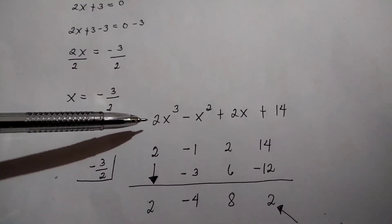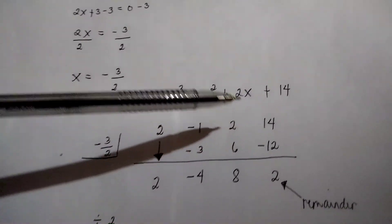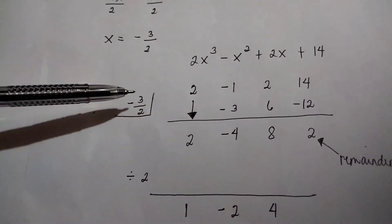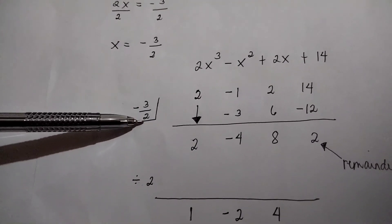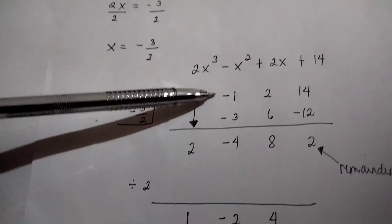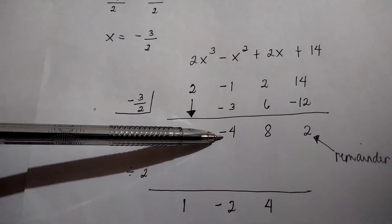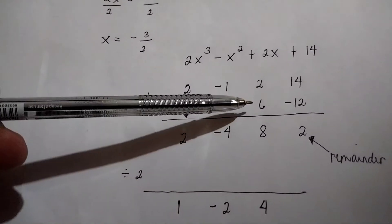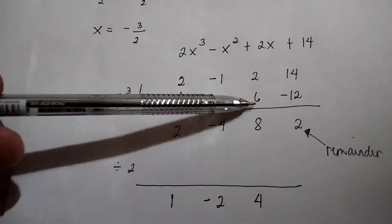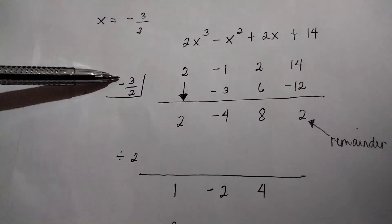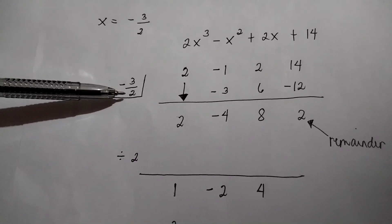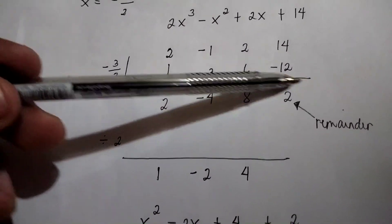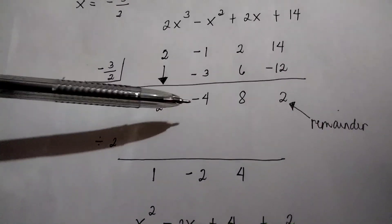Take all the coefficients of the dividend: 2, negative 1, 2, and 14. Bring down 2. Then 2 times negative 3 is negative 6, divide by 2 is negative 3, write it here. Negative 1 plus negative 3 is negative 4. Then negative 4 times negative 3 is positive 12, divide by 2 is 6, write it here. Then 2 plus 6 is 8. Then 8 times negative 3 is negative 24, divide by 2 is negative 12, write it here. Then 14 plus negative 12 is 2, so the remainder is 2. The coefficients are 2, negative 4, 8, and 2.